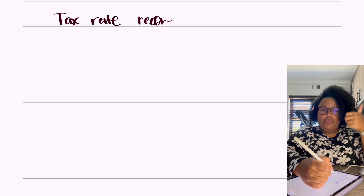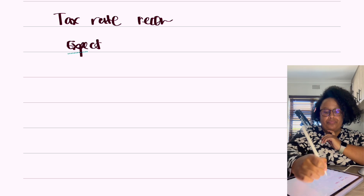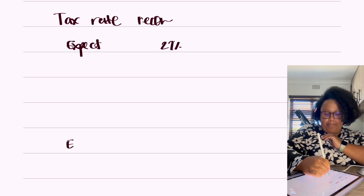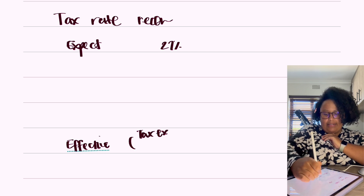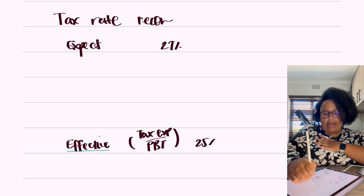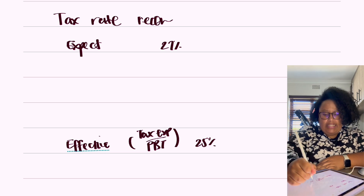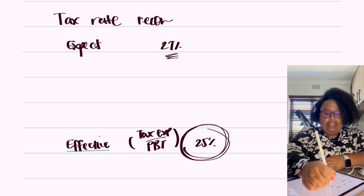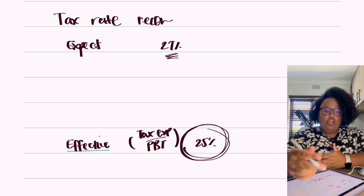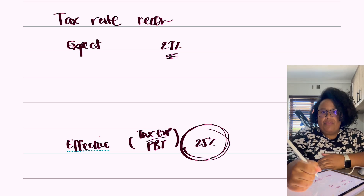In the case of a tax rate recon, the numbers we're referring to are our expected tax rate — which is the corporate tax rate of 27% — and then the effective tax rate. We expect that a business is going to pay corporate tax at 27%. But when we look at the income statement and take the tax expense divided by profit before tax, that gives us the effective tax rate. That number could come up to, say, 25%. And then what we are trying to do with a tax rate recon is explain why the effective tax rate of 25% differs from our expectation of 27%.